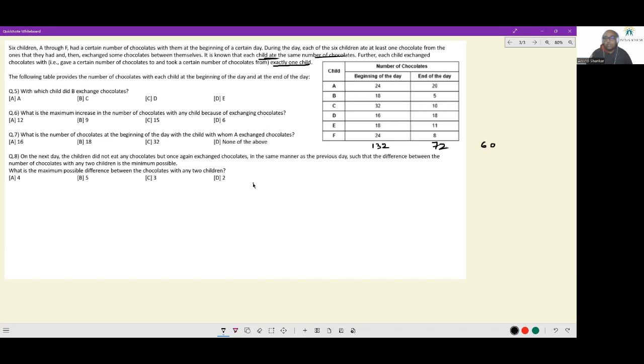So a total of 60 chocolates have been consumed. And we were told that every child ate equal number of chocolates. So every child ate 10 chocolates.